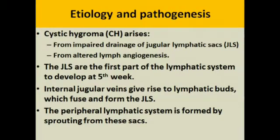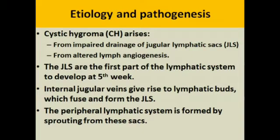First of all, to discuss the etiology and pathogenesis: cystic hygroma arises when there is impaired drainage of jugular lymphatic sacs, or from altered lymphangiogenesis. The jugular lymphatic sacs are the first part of the lymphatic system that develop at the fifth week of gestation. Internal jugular veins give rise to the lymphatic buds which fuse and form the jugular lymphatic sacs. The peripheral lymphatic system is formed by sprouting from these sacs.